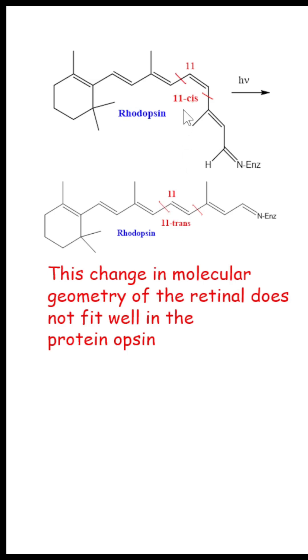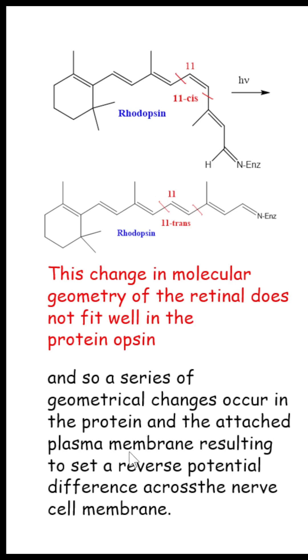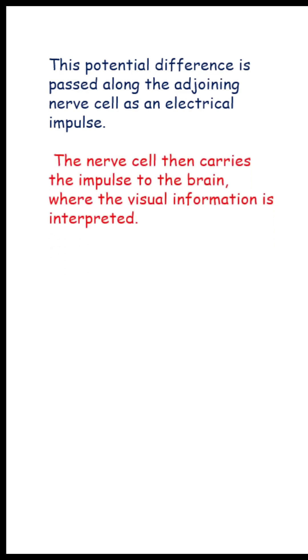Because the trans retinal does not fit well in the protein opsin, a series of geometrical changes occur in the protein and the attached plasma membrane, resulting in a reversal of potential difference across the nerve cell membranes. This potential difference is passed along the adjoining nerve cells as an electrical impulse.